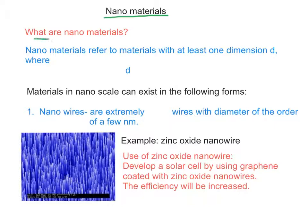Nanomaterials. What are nanomaterials? Nanomaterials refer to materials with at least one dimension D where D is longer than 1 nanometer and shorter than 100 nanometers.